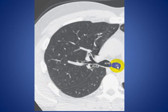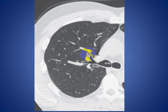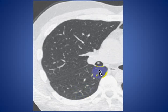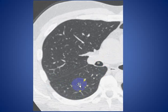Here you can see the left main bronchus, right main bronchus, and the right upper lobe bronchus. This is the anterior segment bronchus of the right upper lobe. This is the posterior segment of the right lower lobe, and here is the fissure. This is the superior segment of the right lower lobe. This is the bronchus intermedius, and here again is the superior segment of the right lower lobe.